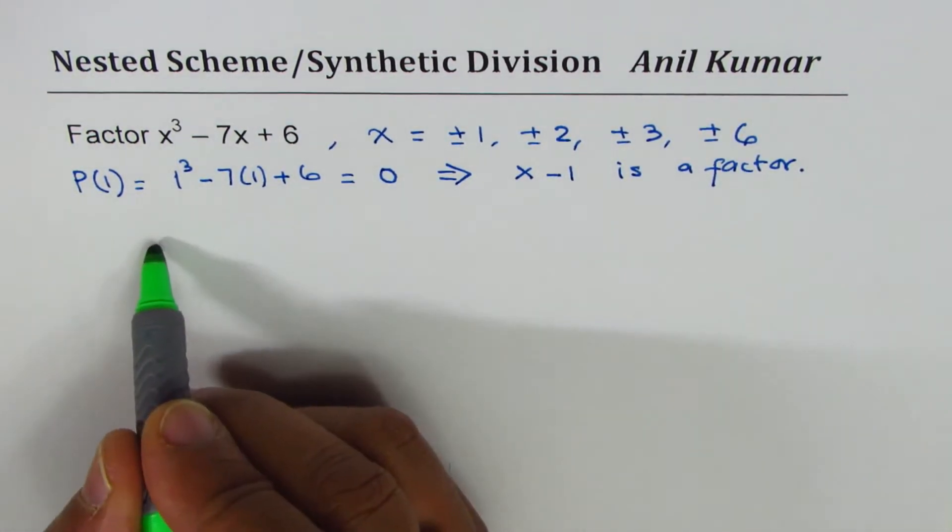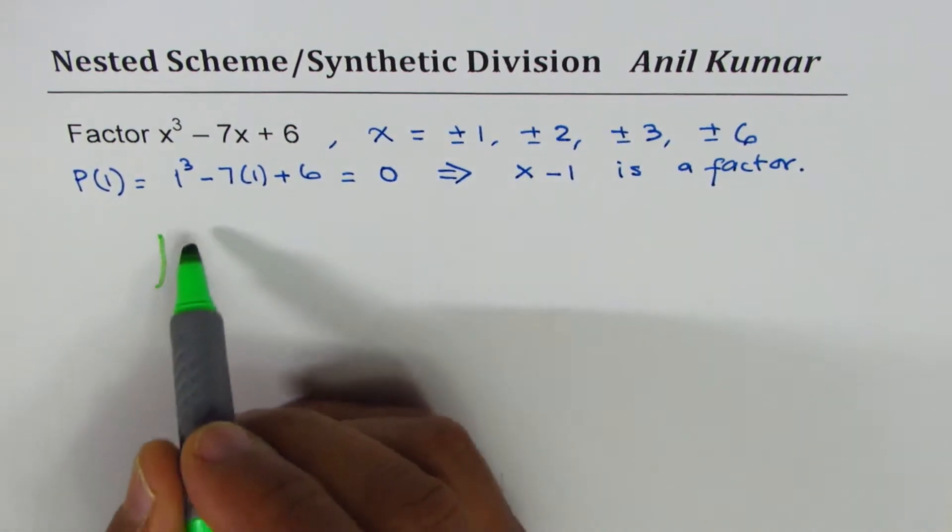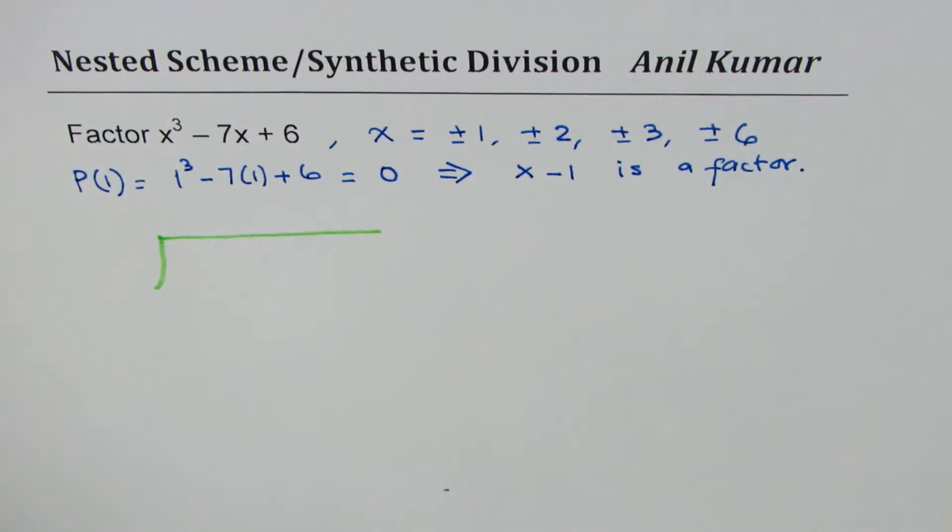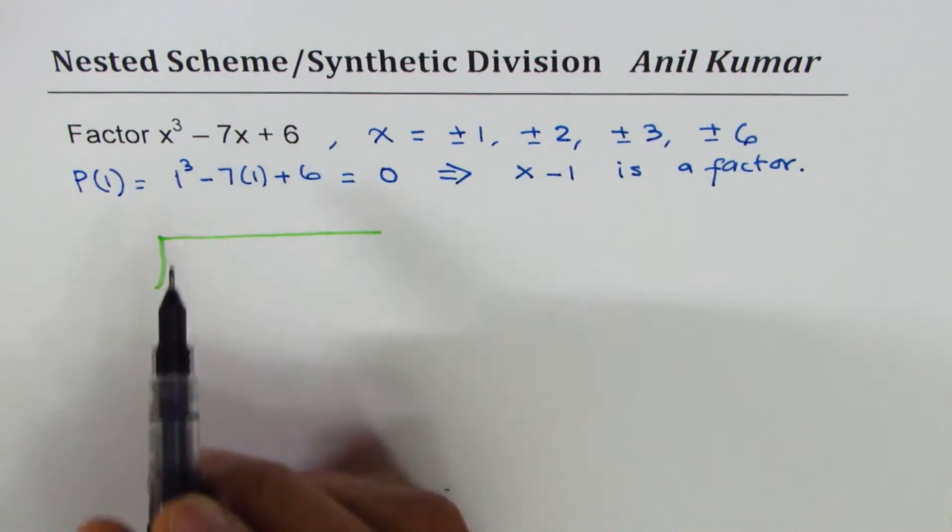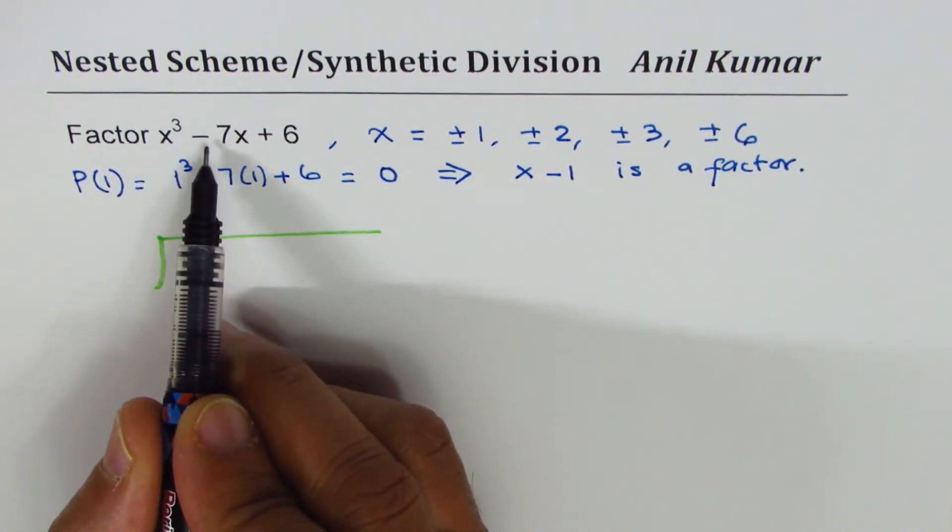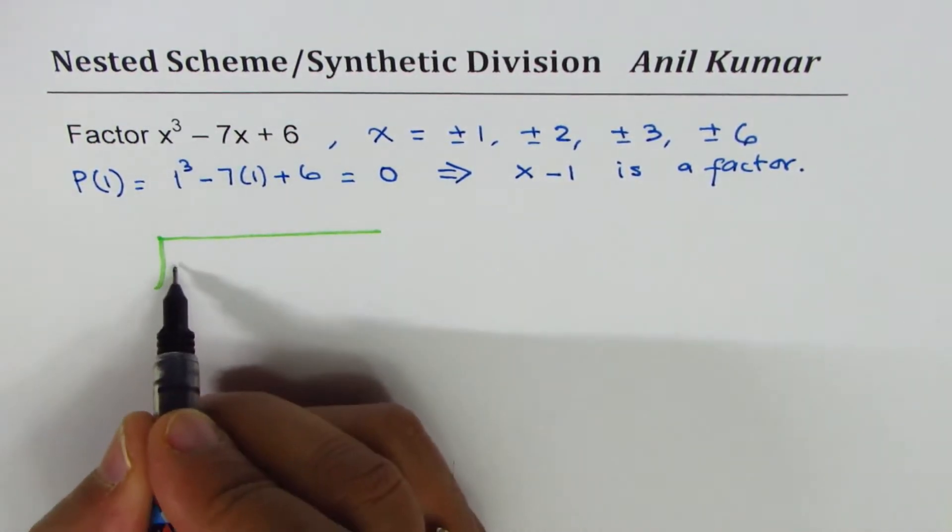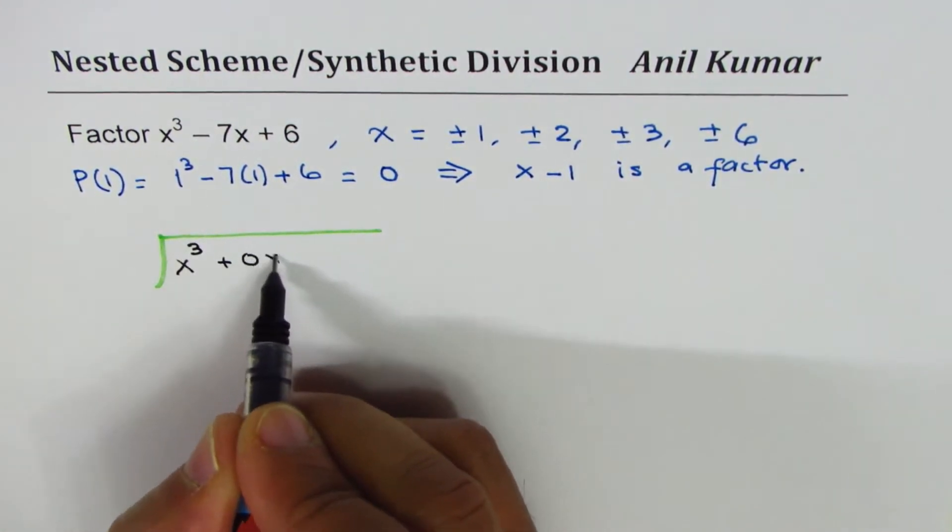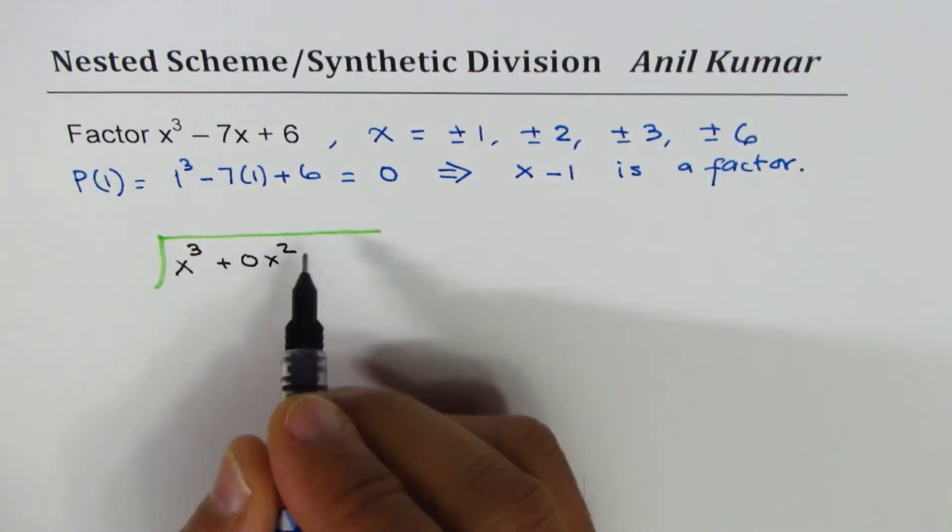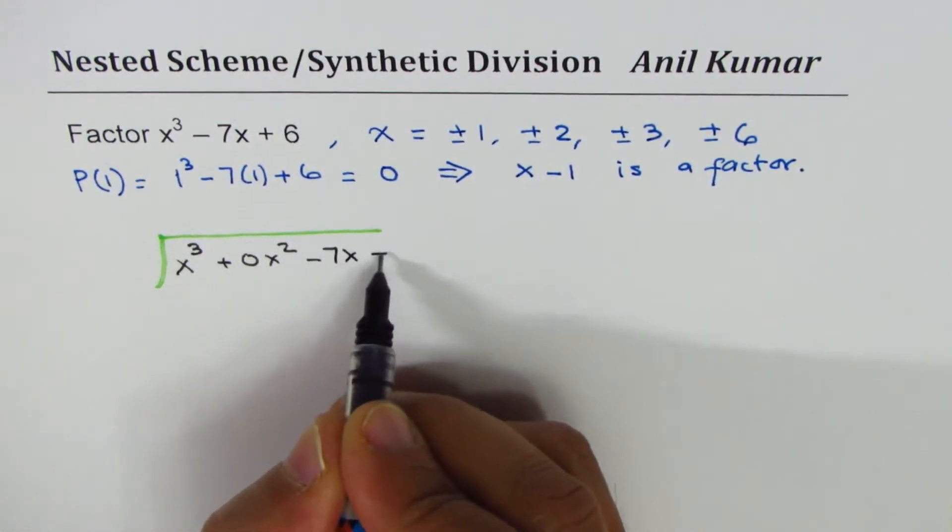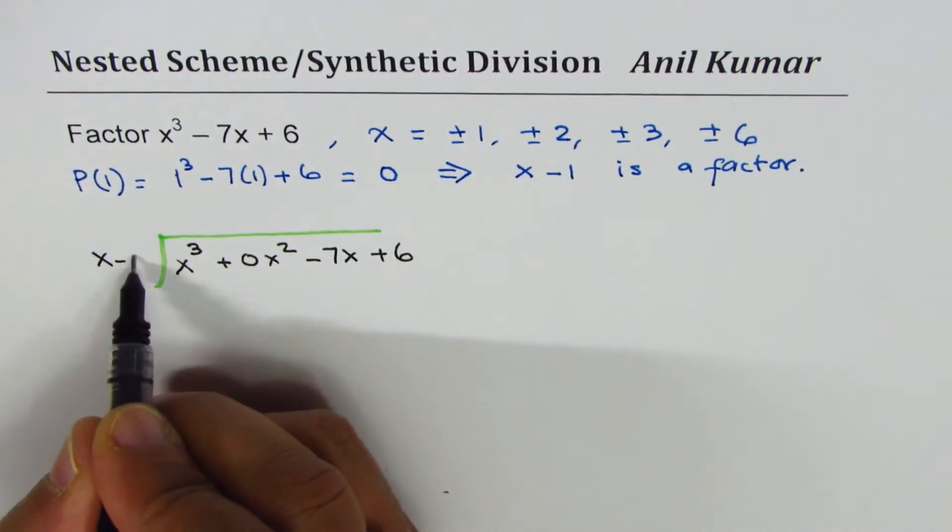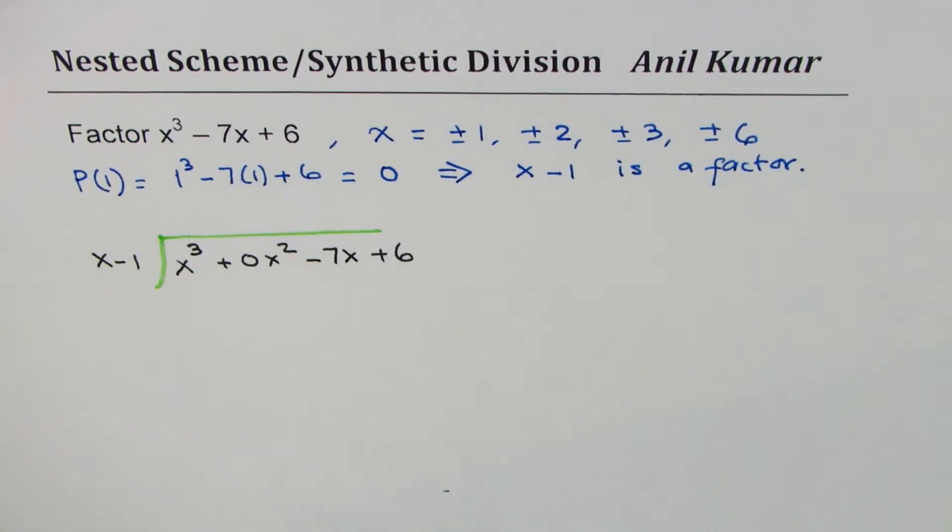Here I'll show you both synthetic and long division. So in synthetic division we straight away write down the polynomial. Now in this polynomial, x square position is missing, so we are going to use a placeholder. So we have x cube plus 0 x square, this is called the placeholder, minus 7x plus 6. We'll divide by x minus 1 as we just found that x minus 1 is a factor.